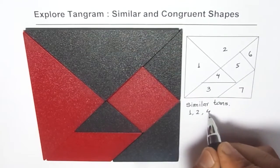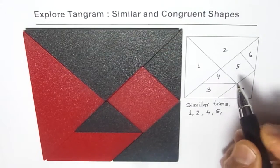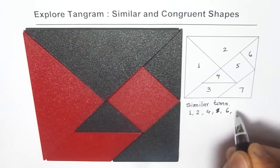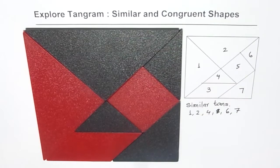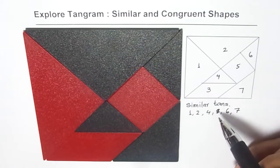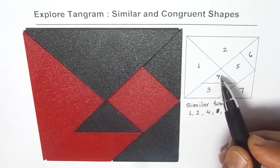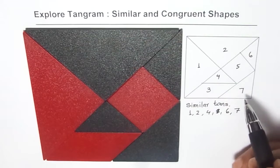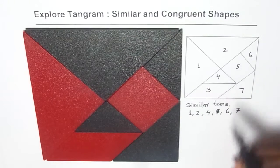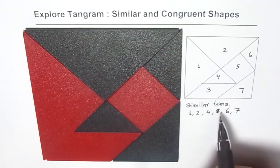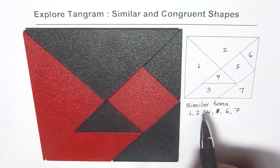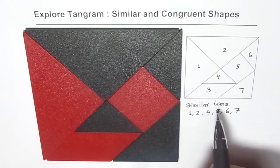So one, two, four — not five, five is a square — one, two, four, six and seven. They are all similar since they are triangles with exactly the same shape. Their sizes may be different, but all of them are similar. It is important to understand that similar means same shape; size could be same or different.